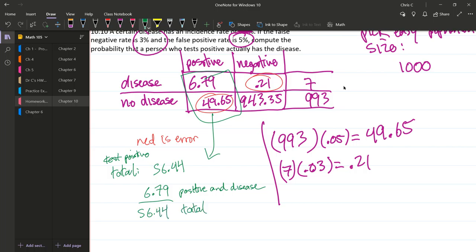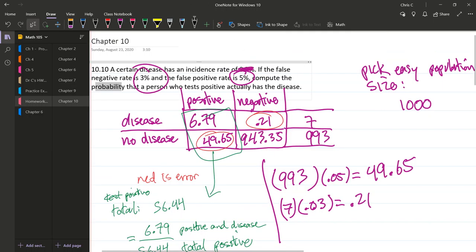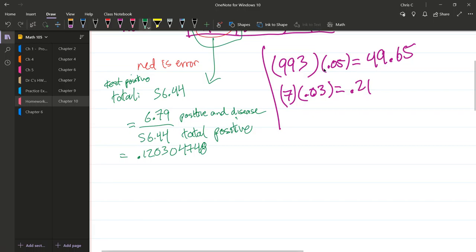What's the probability that somebody testing positive actually has the disease? So we have the numbers we need. Testing positive with the disease is 6.79, divided by the total number positive. And just divide these. 6.79 divided by 56.44. So we get this is equal to 0.1203.